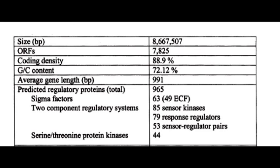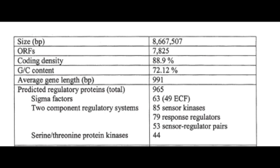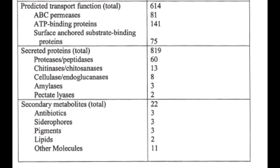Streptomyces coelicolor's genome contains 8 million base pairs with 7,825 open reading frames. It has a coding density of 88.9% and a GC content of 72%, and it has an average gene length of 991 base pairs. There are 965 predicted regulatory proteins and 614 predicted transfer functional proteins.